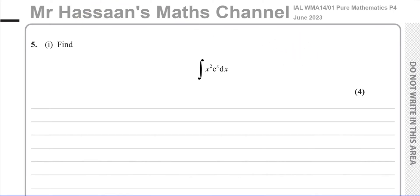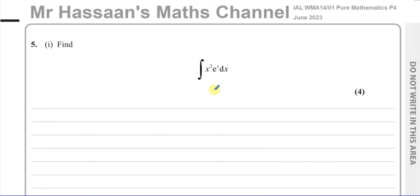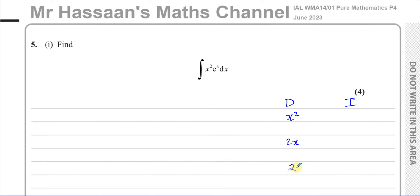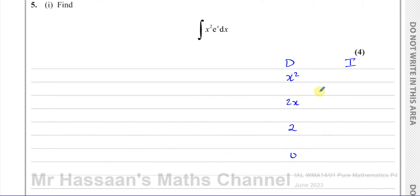So therefore it's not something which you can use reversing of the chain rule for. What we can do is integration by parts, because here we have two functions which are unrelated multiplied by each other. One of them we differentiate, the other one we integrate. The one we want to differentiate is the one that breaks down — that's going to be x squared. Differentiating x squared gives 2x, then 2, then zero.